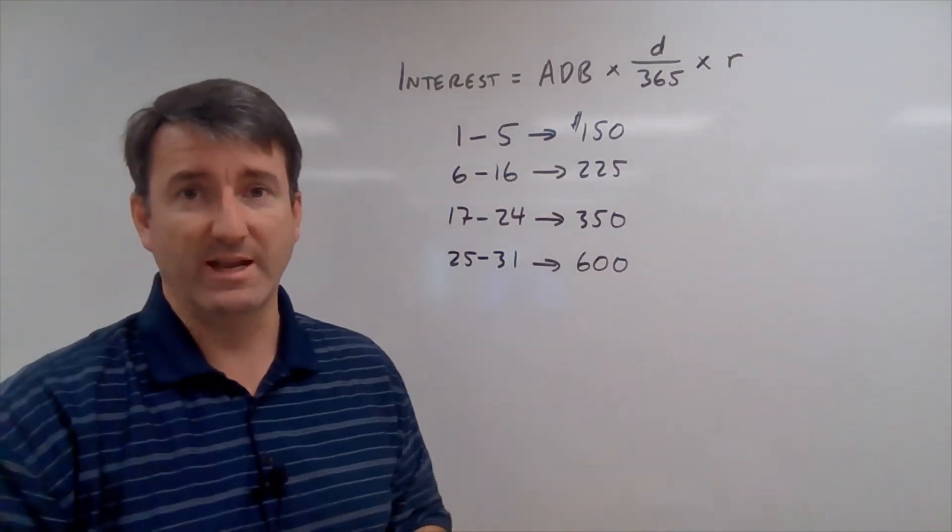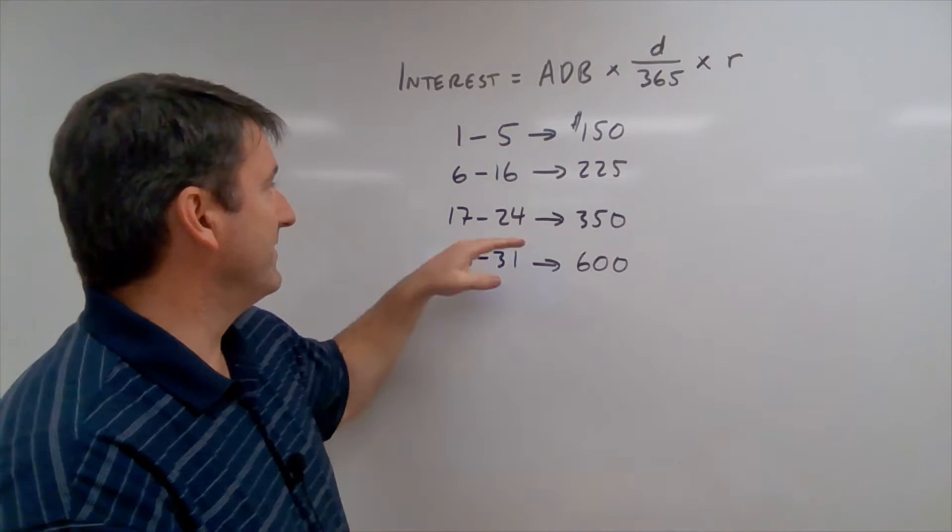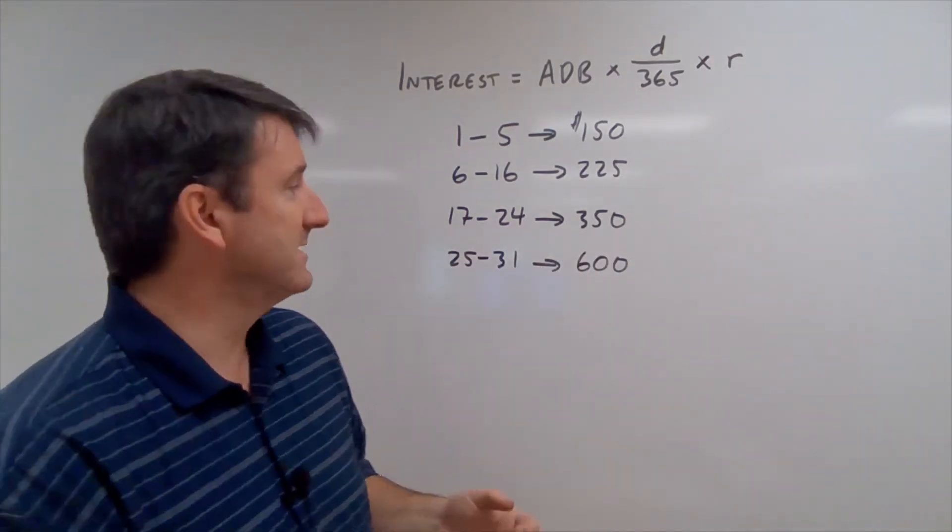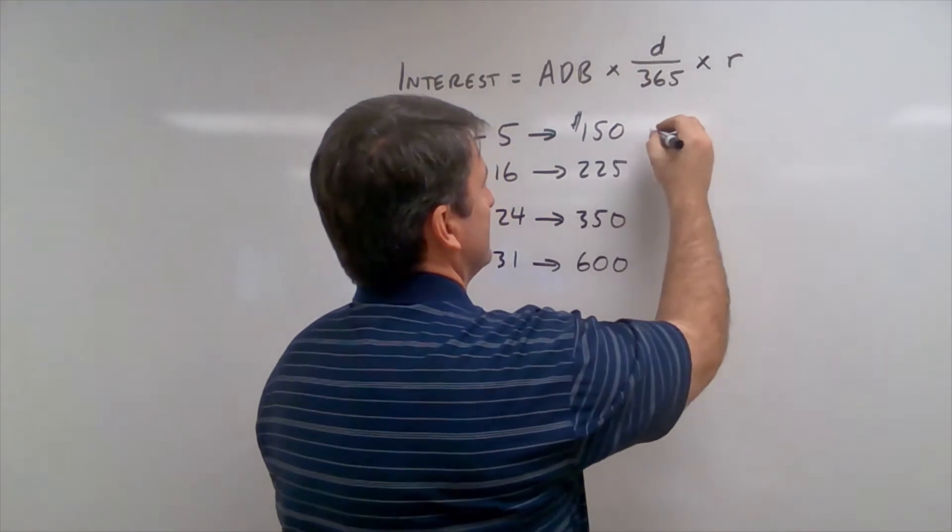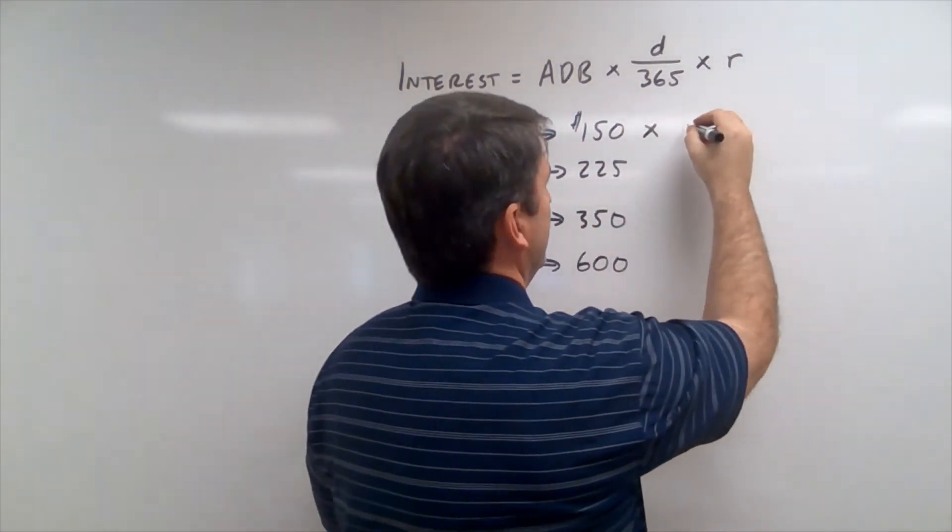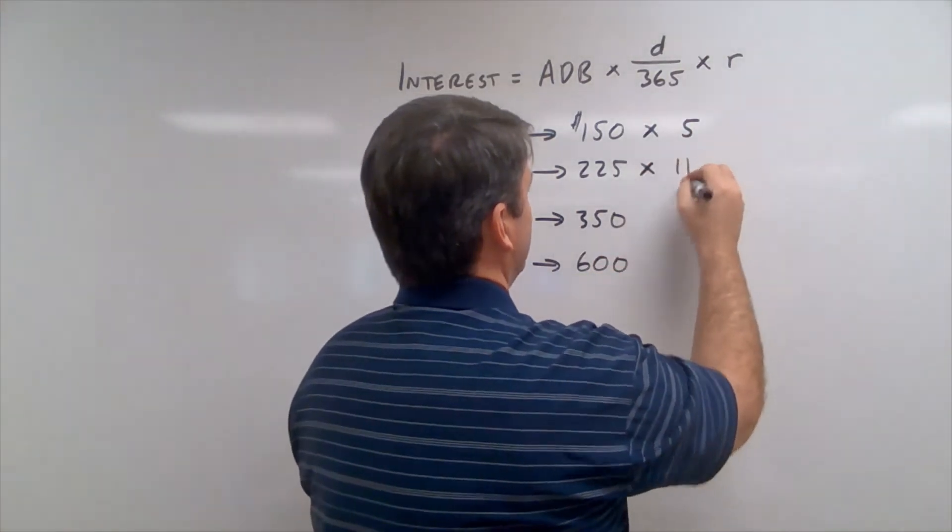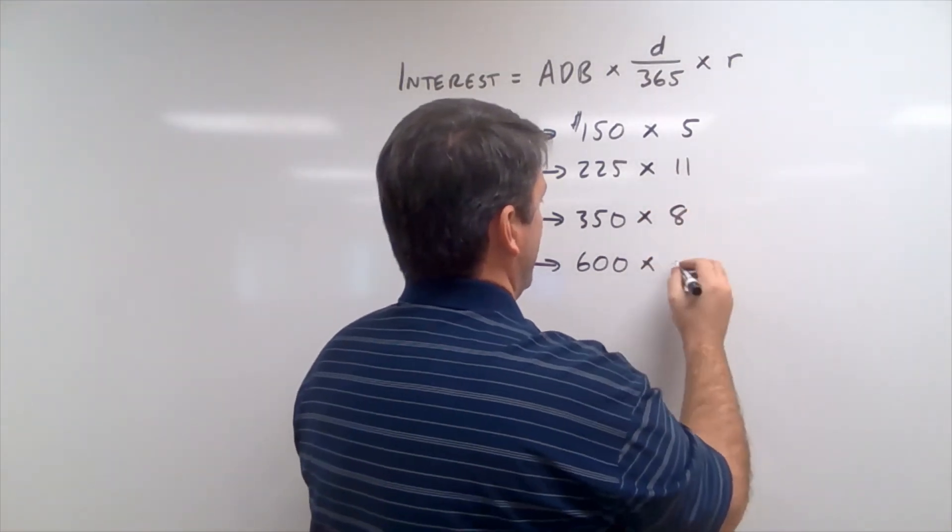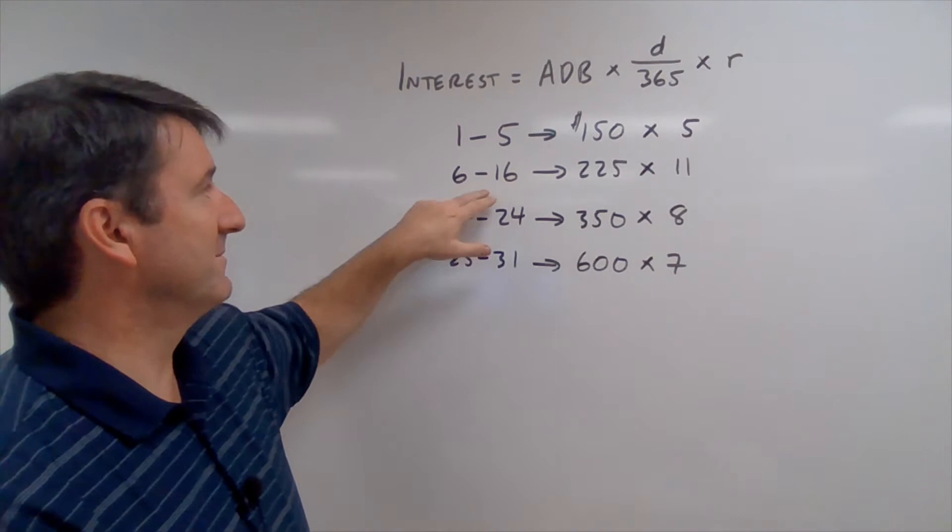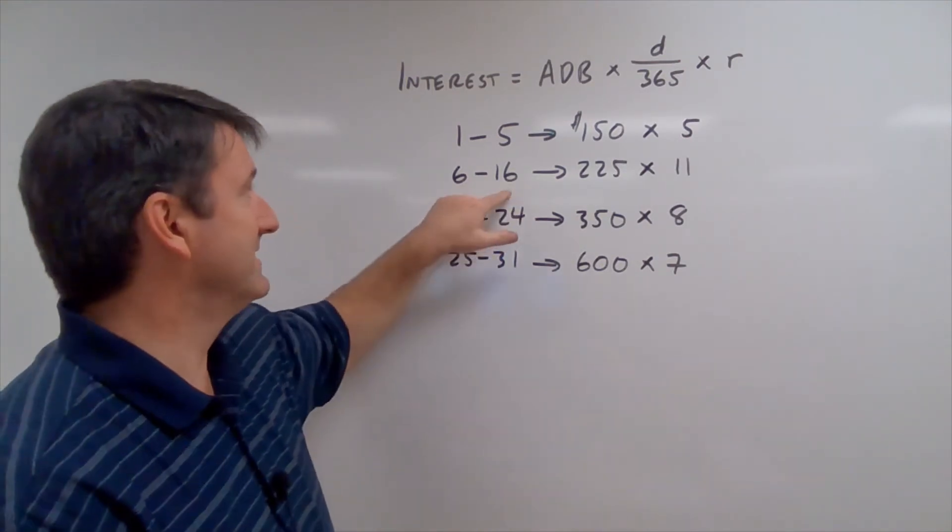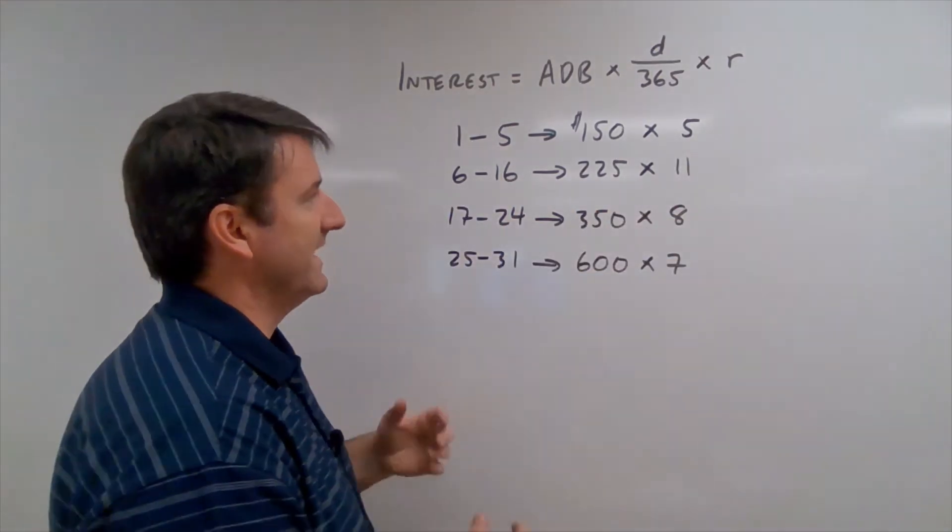So for the first five days of the month, we had a balance of $150. For the next 11 days, we had a balance of $225. Then for the next eight days, we had a balance of $350. And for the last seven days of the month, we had a balance of $600. So what we need to do now is multiply this 150 times 5, because we had that balance on five days of the month. And we'll multiply this by 11, and this one by 8, and this by 7. Make sure you're careful with how you're counting these, because there's a tendency to look at something like this and say, well, this is 10 days, because 16 minus 6 is 10. But if you count the 6th and the 16th, this ends up being 11 days.